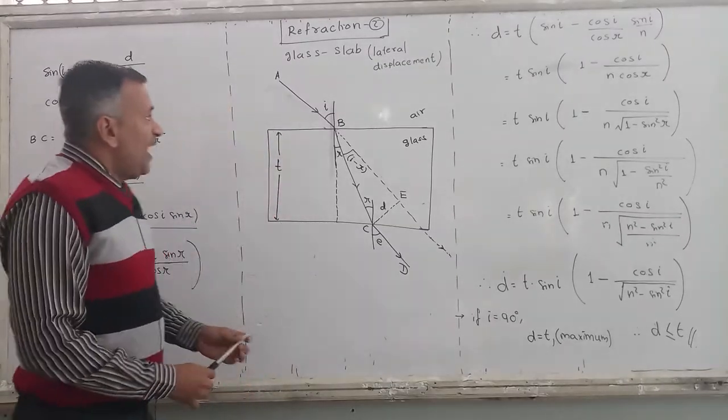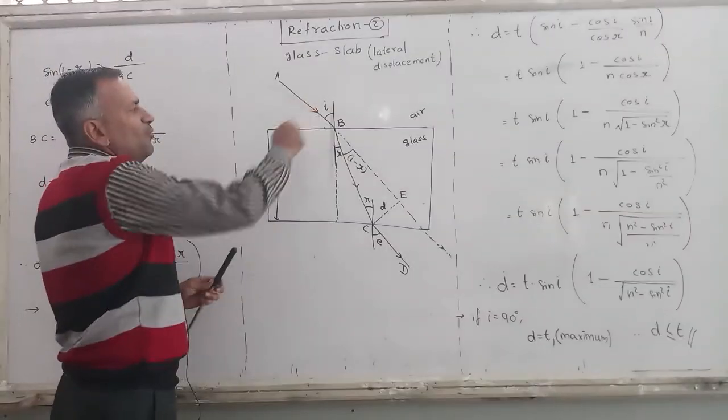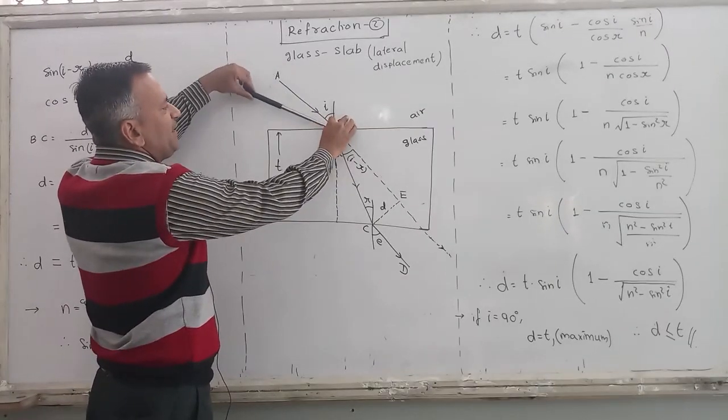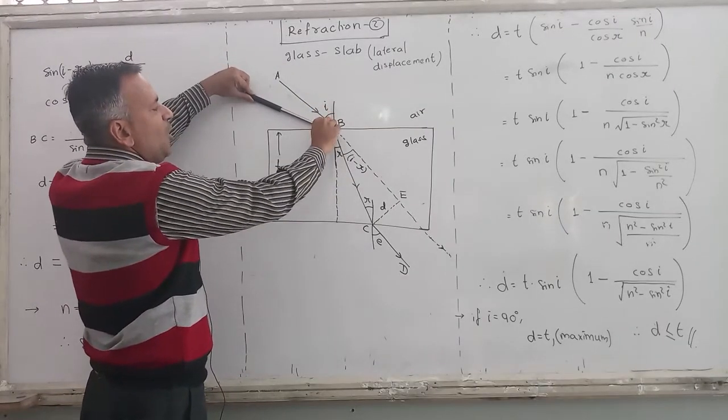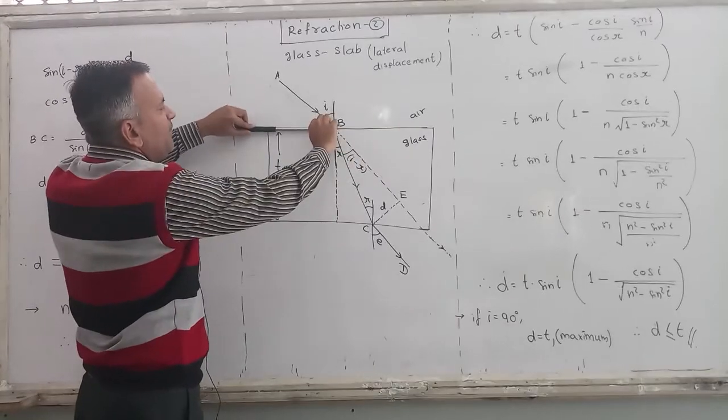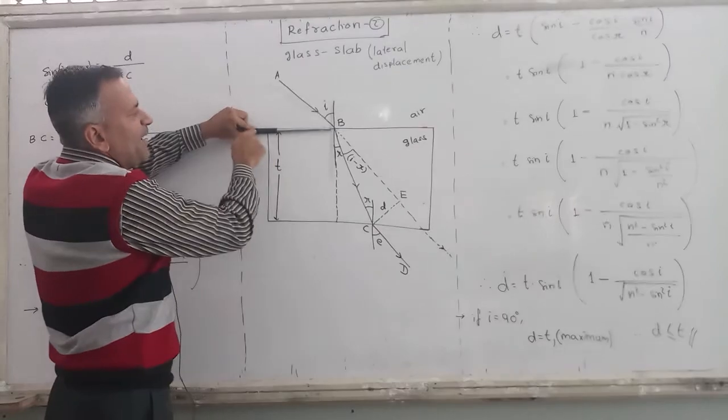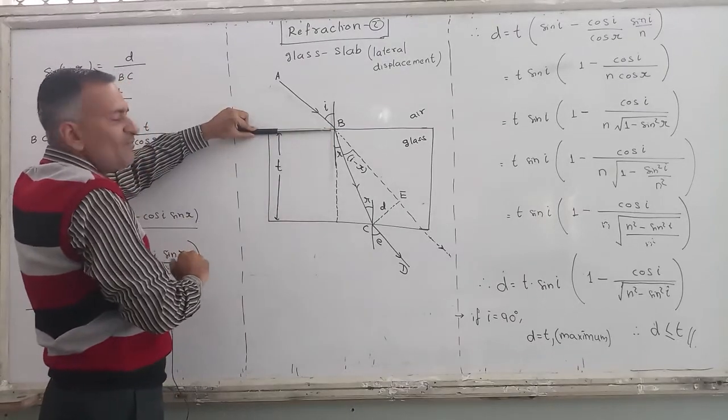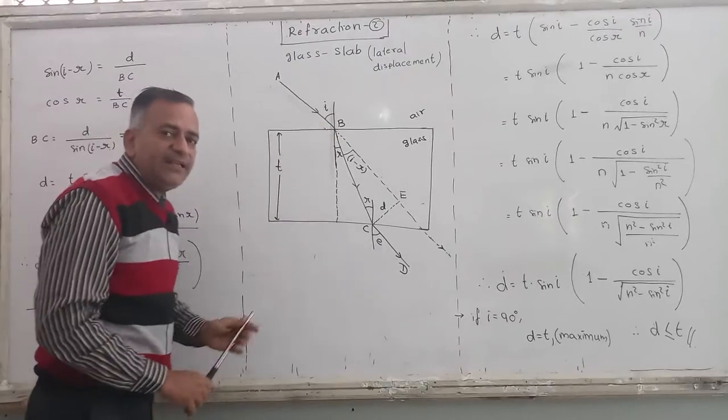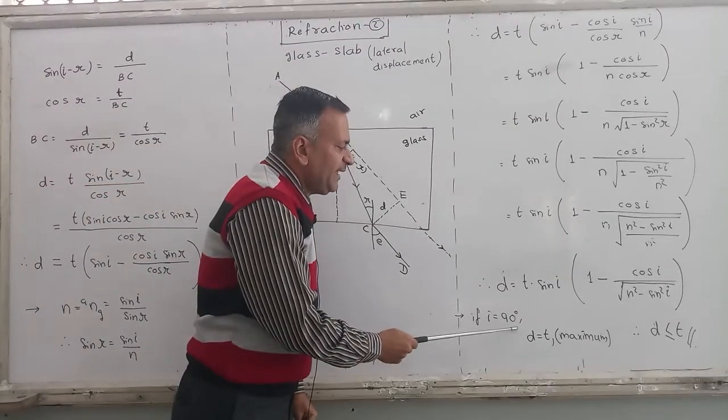So if you keep increasing the value of angle I - this is I - angle I increases, and like this angle I increases. How much can you increase it? You can maximum make it like this. When incident ray is like this, what is the angle of incidence? It is 90 degrees. So when angle I equals 90...